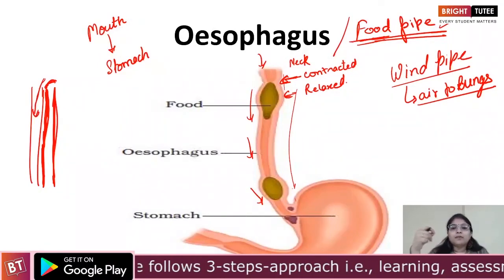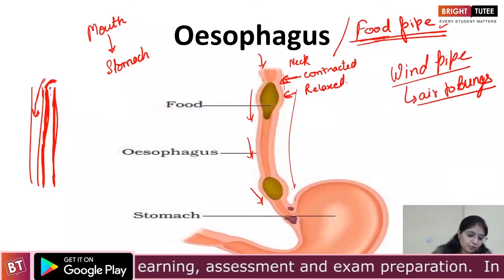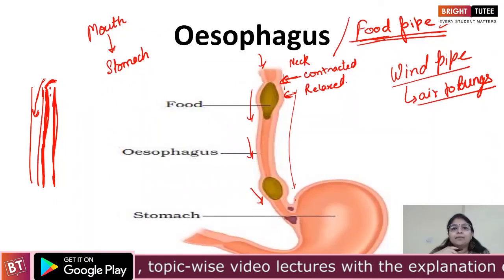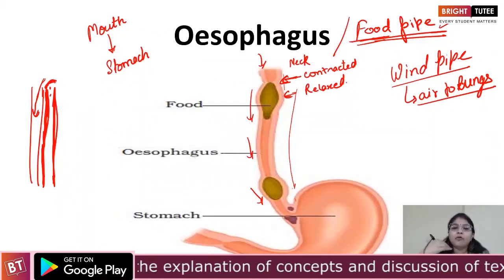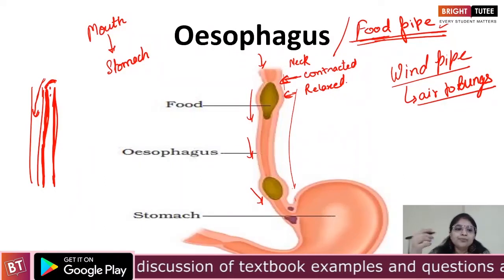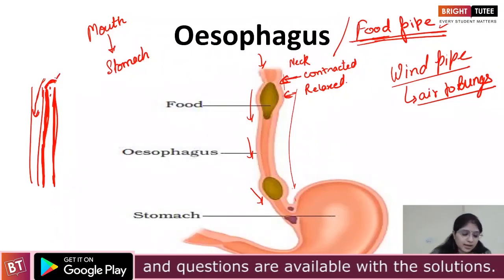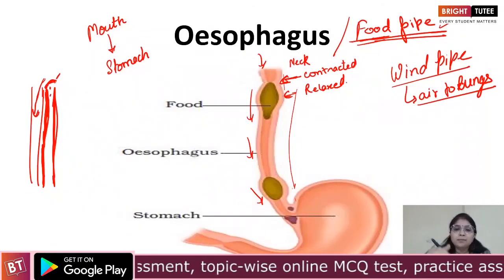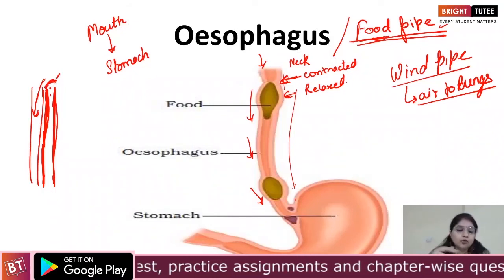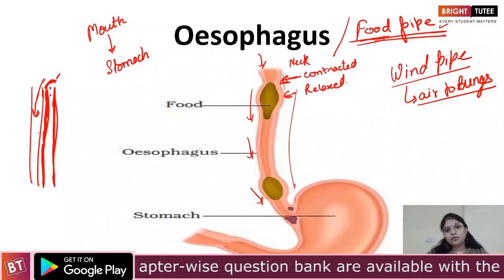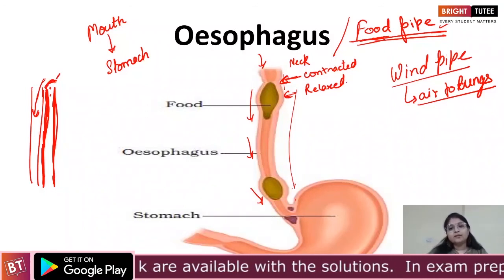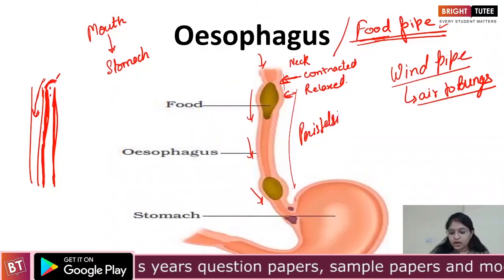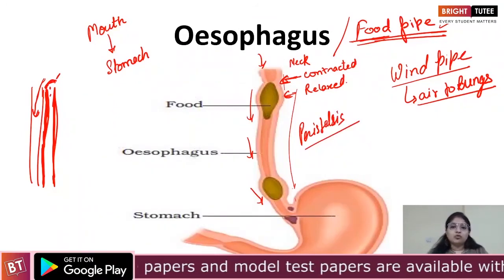Sometimes if a food particle enters the windpipe, we have a serious fit of coughing. The reason is that the windpipe is irritated and wants to remove that particle. That is why we cough a lot. This flap-like structure is very important in covering and avoiding food going into the windpipe — it helps in covering the windpipe and guiding the food into the food pipe. This is all about the esophagus. The movement that occurs in the esophagus and the alimentary canal is called peristalsis — the movement which allows food to travel from the mouth towards your stomach.